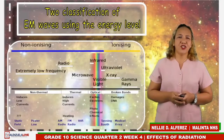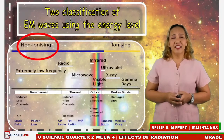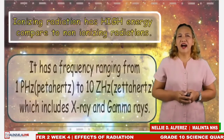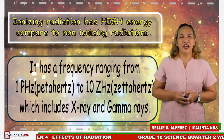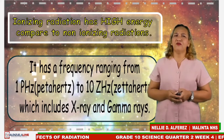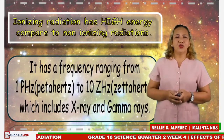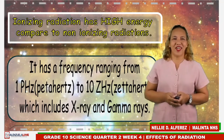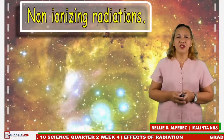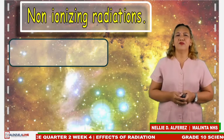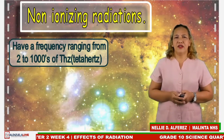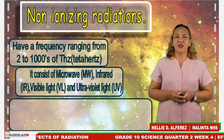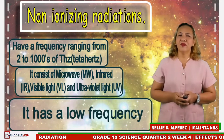There are two classifications of EM waves: non-ionizing and ionizing radiation. Ionizing radiation has high energy compared to non-ionizing radiation. It has a frequency ranging from 1 petahertz (1×10¹⁵ Hz) to 10 zettahertz (1.0×10²¹ Hz), which includes X-rays and gamma rays. Non-ionizing radiation has a low frequency ranging from 2 to 1,000 zettahertz and consists of microwaves, infrared, visible light, and ultraviolet rays. It has low frequency and low energy.